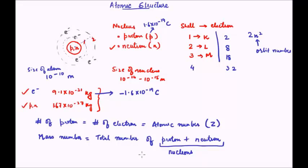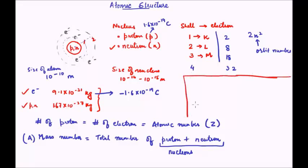So now we have an idea about the subatomic particles, their mass, their charge nature, and we have seen the concept of electron shells. We have also seen that atomic number is represented by Z, and mass number is represented by A. Any particular atom is represented in terms of its atomic number and mass number in a specific notation.